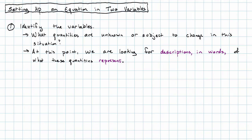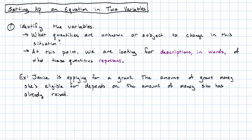Let me give you an example of a story. Suppose that Janice is applying for a grant, and the amount of grant money she's eligible for depends on the amount of money she's already raised. We know what the two things are that are subject to change in this story. They are the grant money that Janice is eligible for and the money that she's already raised. In fact, this story even tells us that the grant money depends on the money raised—therefore, the money raised is independent and the grant money is dependent. Notice that there were no numbers in that story. Even without any numbers, we were able to identify the variables, and we should identify the variables before we start looking at the numbers.